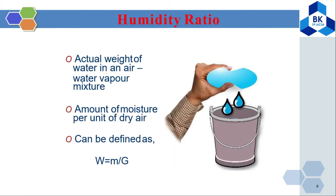The humidity ratio is the actual weight of water vapor in the air-water vapor mixture — the amount of moisture per unit of air. It can be defined as W = M / G, where W is the humidity ratio, M is the weight of the water vapor, and G is the total weight of the air and water together.